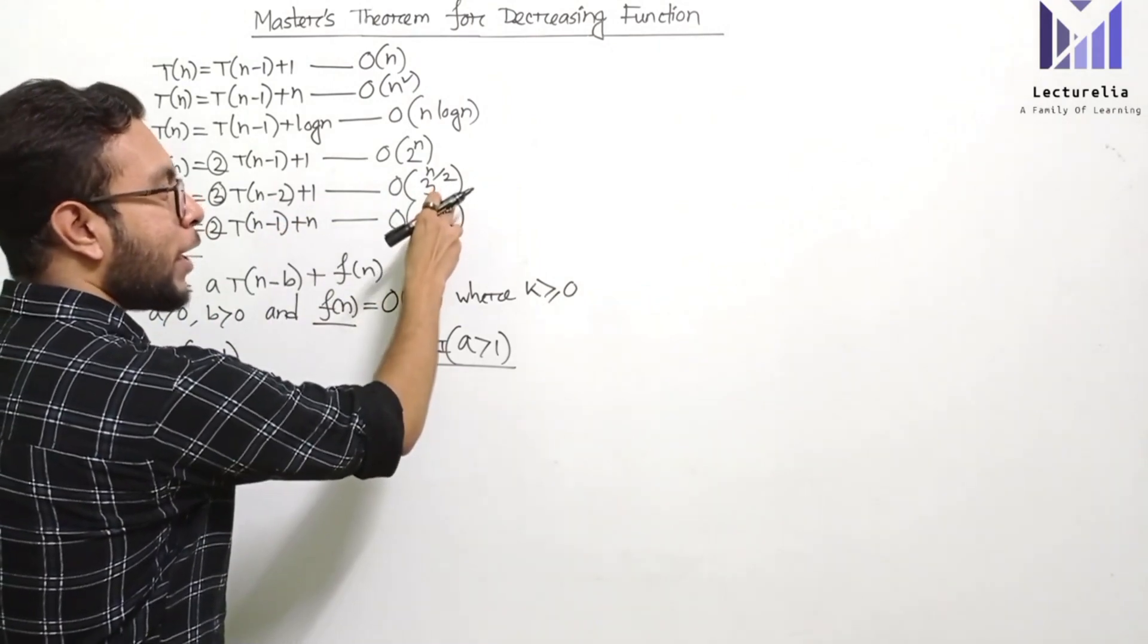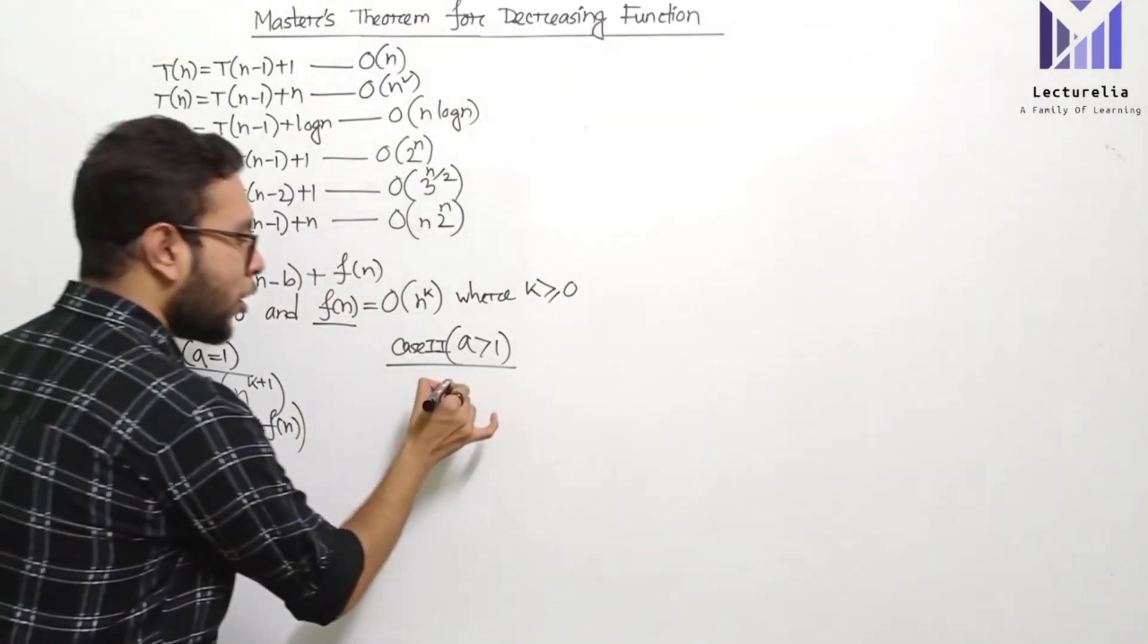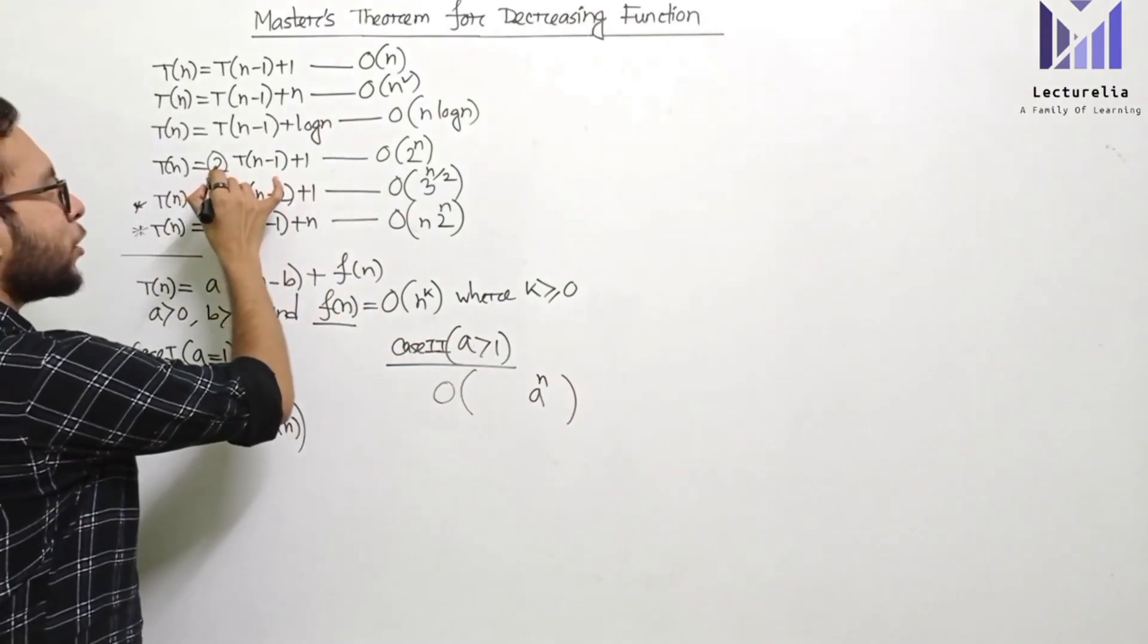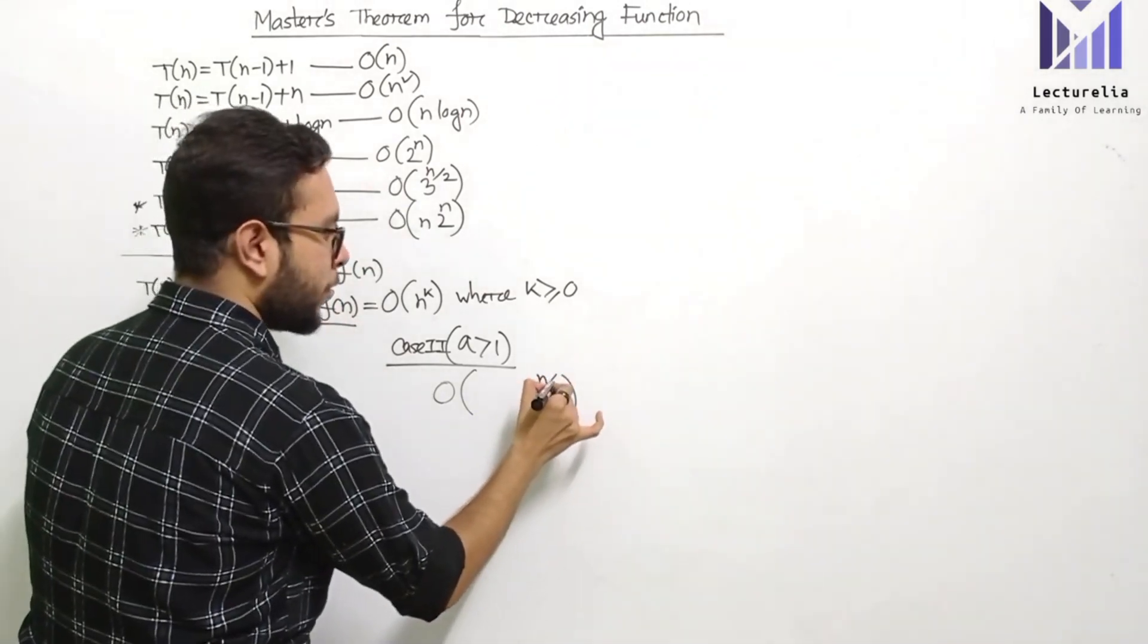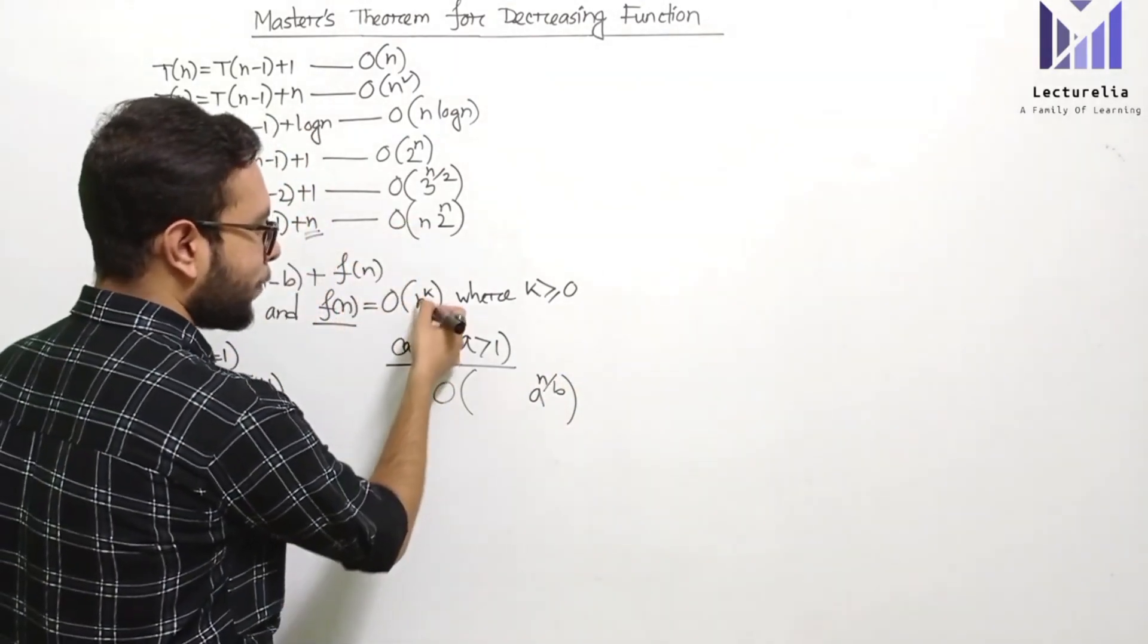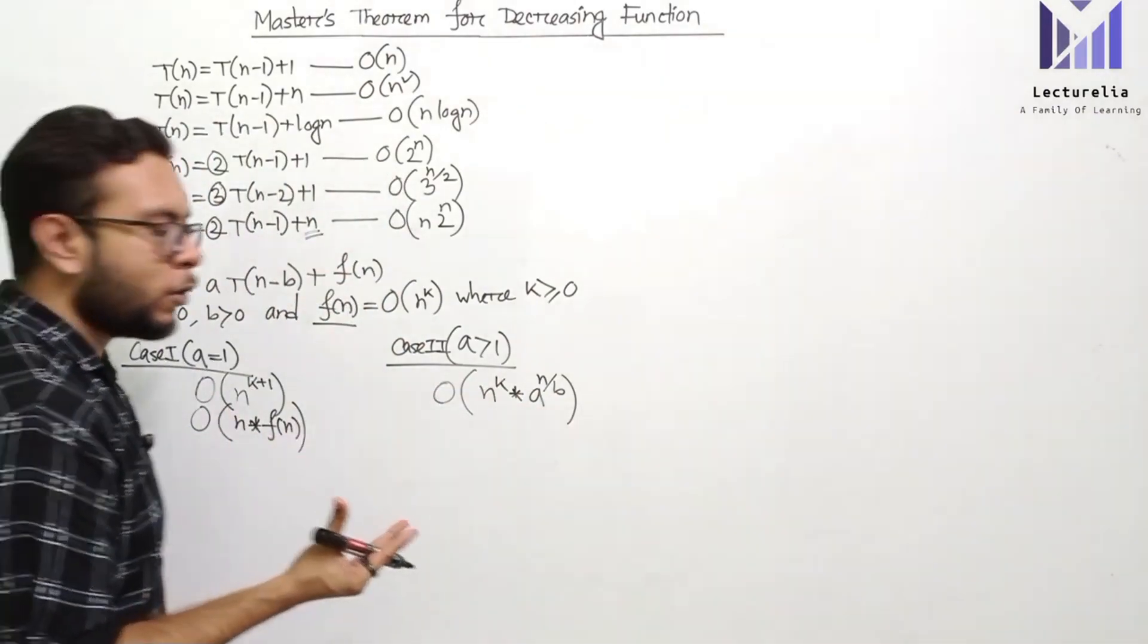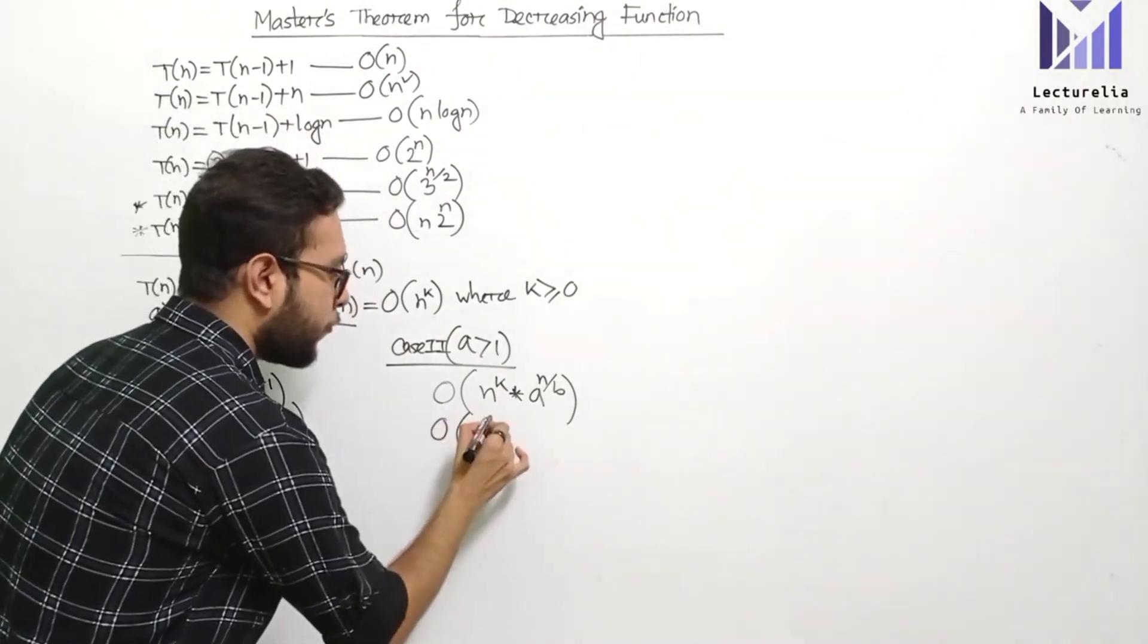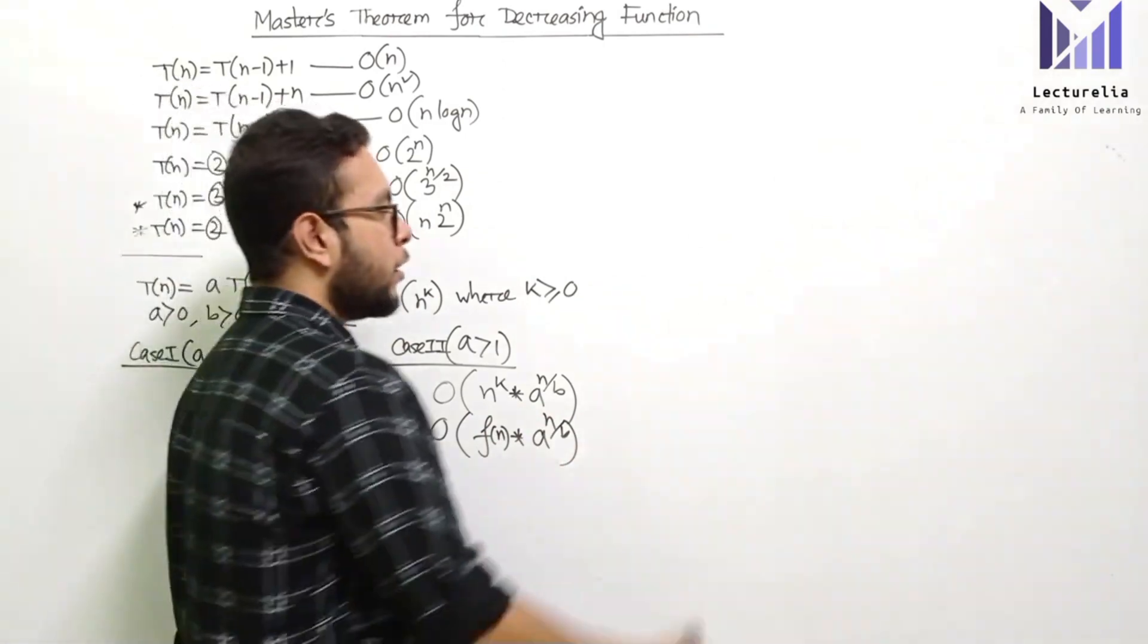The time complexity would be order of n. For T(n) with division by b, we have multiplication by n to the power k.